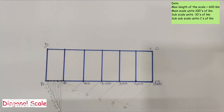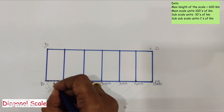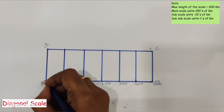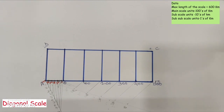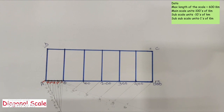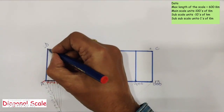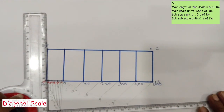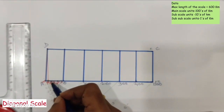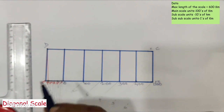Number the subscale units from right to left: 10, 30, 50, 70, 90, 100. The main scale units are in hundreds of kilometers and subscale units are in tens of kilometers. Since we are constructing a diagonal scale, join the 90 kilometer point to point D with a diagonal line. Then draw lines parallel to this diagonal, passing through 80, 70, 60, 50, 40, 30, 20, 10, and 0.